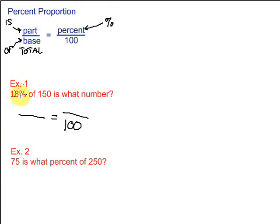18%, okay, it has the percent, so it must go above the 100 right here. If you see the percent sign, that goes in the percent spot, which is right above the 100. Then we continue through the problem of 150. 150 of suggests the base, so the 150 is going to go on the bottom, 150.